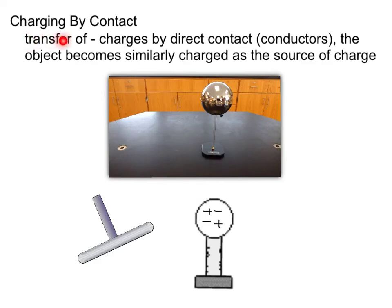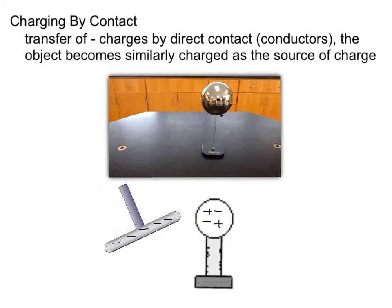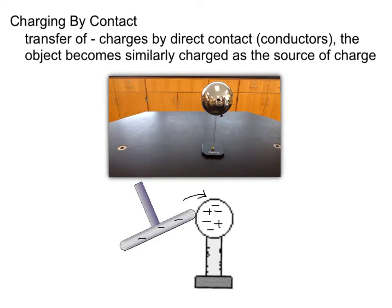Charging by contact is the transfer of negative charges by direct contact between conductors. The object you're charging becomes similarly charged as the source of charge. In this example, I take a negatively charged plate and bring it into contact with a neutral metal sphere, thus charging that metal sphere also negatively. Some negative charges are transferred from the plate to the sphere — before we had five negative charges on the plate, now we only have three, and those other two charges are now present on the metal sphere, making it negatively charged as well.